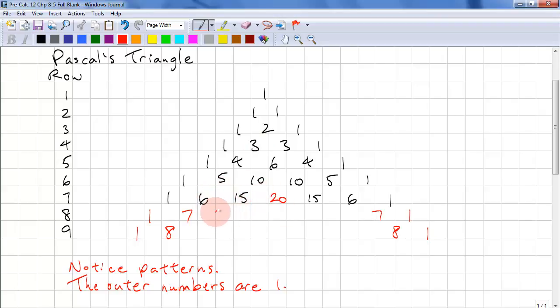6 plus 15 is 21. So we can just put 21 over here. 15 plus 20 is 35. So we can put 35 right here. 7 plus 21 is 28.